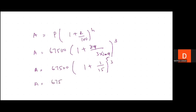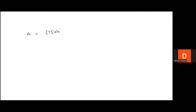So amount = 67,500 × (16/15)³ = 67,500 × (16/15) × (16/15) × (16/15). This calculation is a bit lengthy but we have to do it. Cancelling: 67,500 divided by 15³ = 3375, and 67,500/3375 = 20. So amount = 20 × 16³.